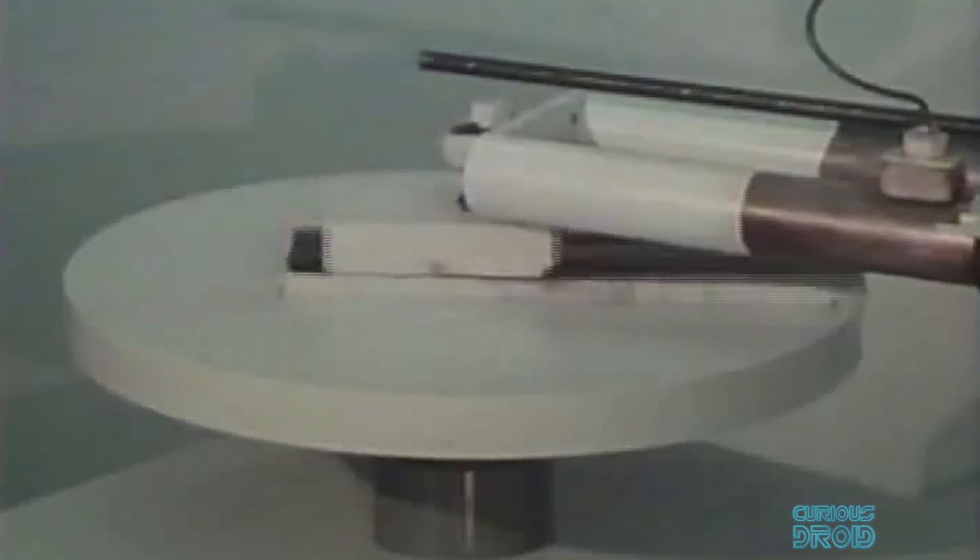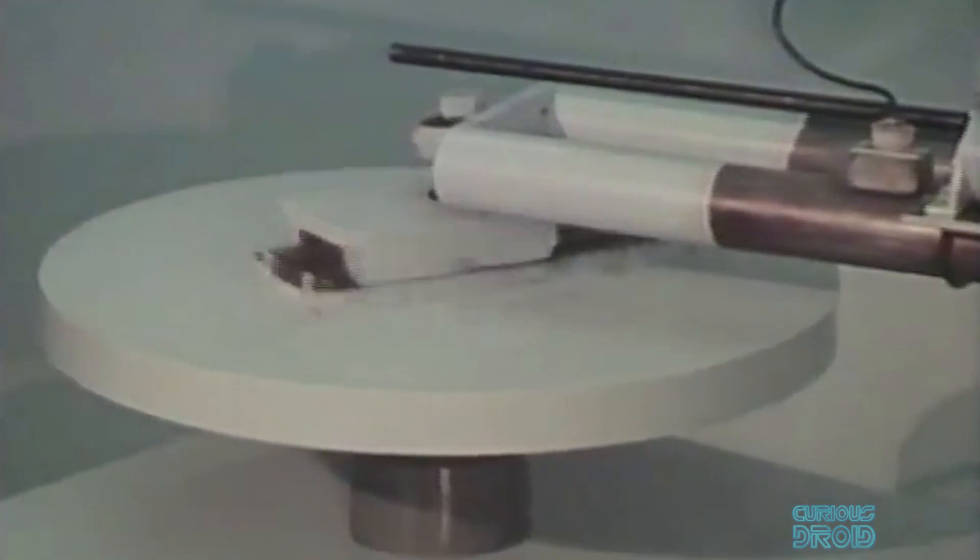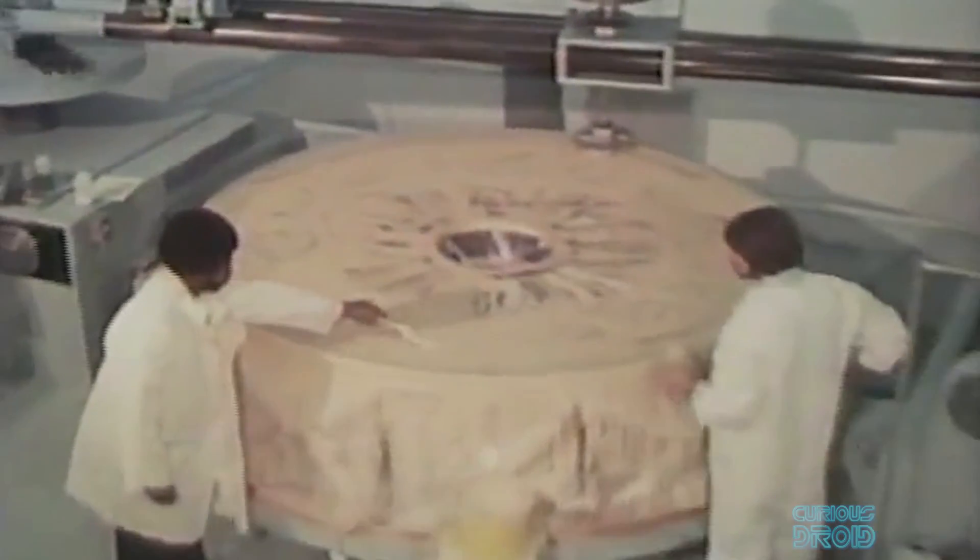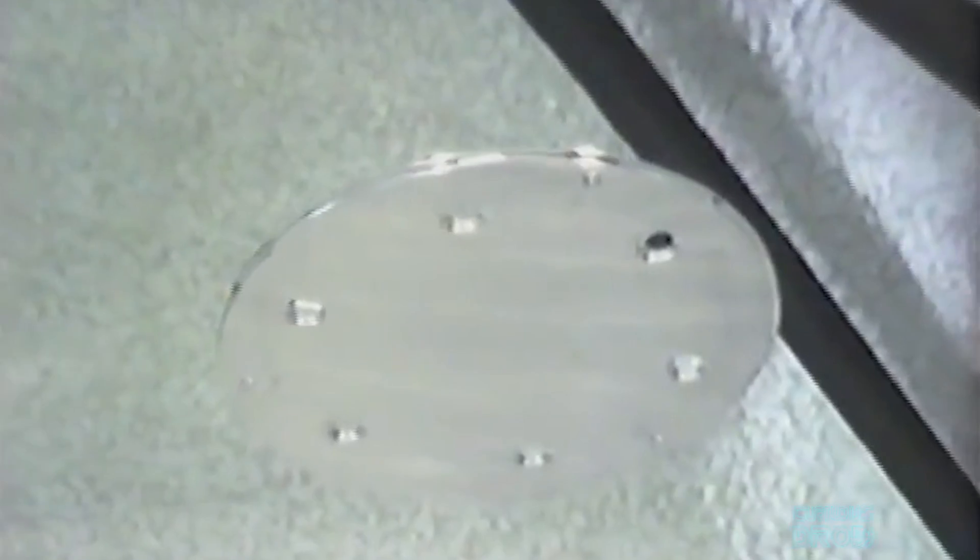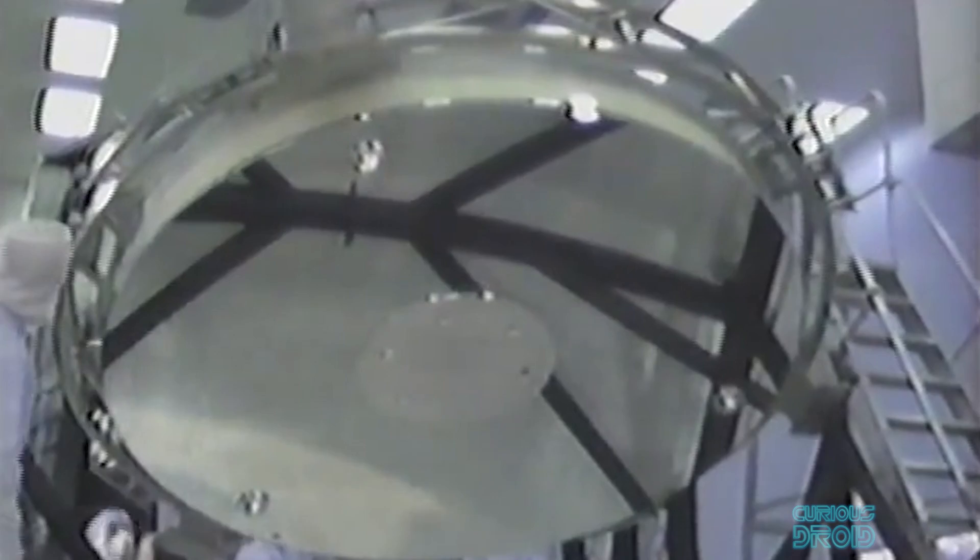Every day for nine months, the crew polished the primary mirror, periodically moving it on its tracks to the null corrector to see how much closer they were to the final shape. At the end of the long process, the RNC gave a null result. At last, the so-called perfect mirror was finished.